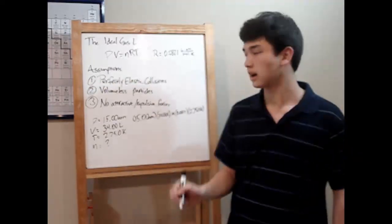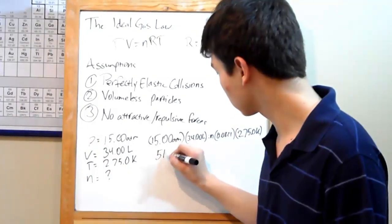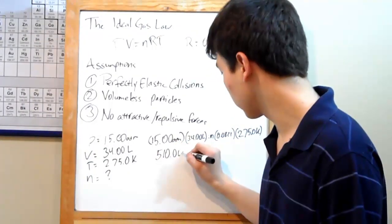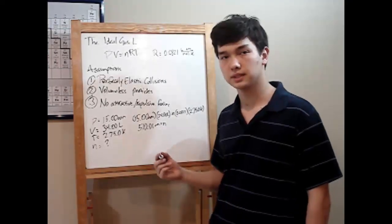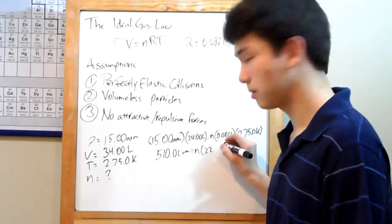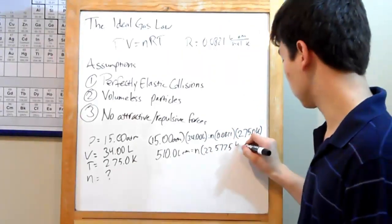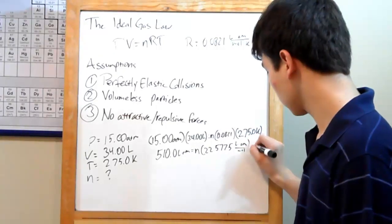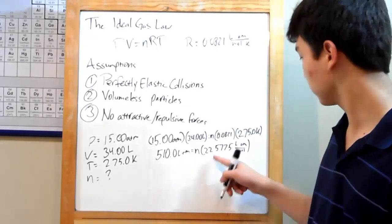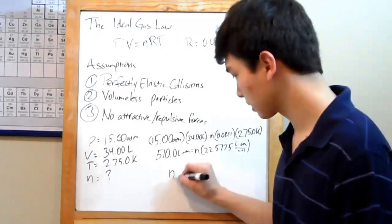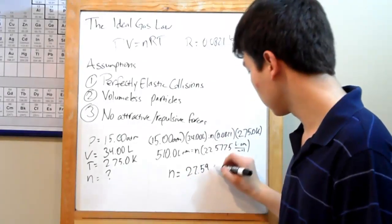Now you just need to simplify. 15 times 34 will give you 510.00 liter atmospheres. We still don't know n, but R times T will give you 22.5775 liter atmospheres per mole. And then you just need to do some division. N is 510 divided by 22.5775. Plug that into your calculator and you'll get 27.59 moles.